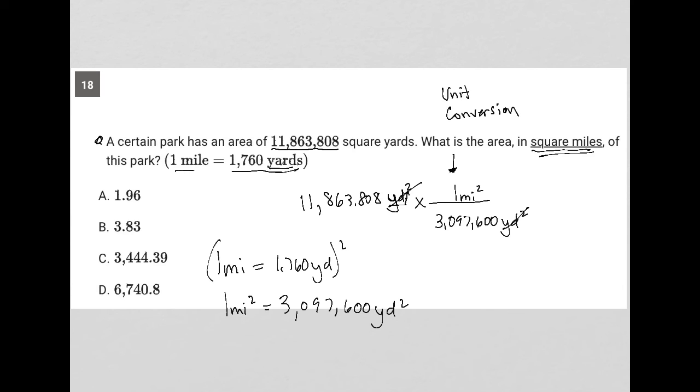And all that's left now is to use my calculator and divide this number by that number. So again, in my calculator, 11,863,808, divided by 3,097,600, equals 3.83. So I'd have 3.83 as my answer, and therefore choice B is the correct answer.